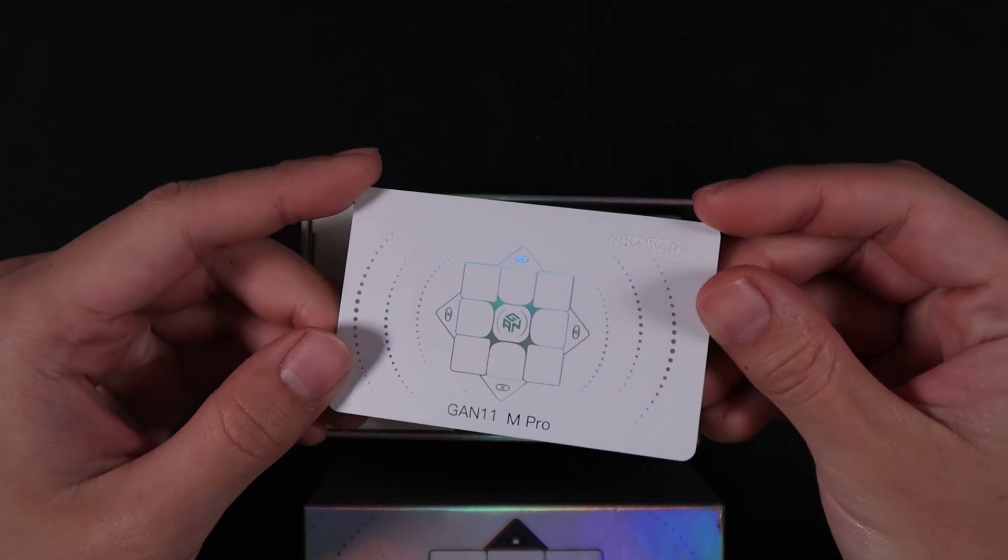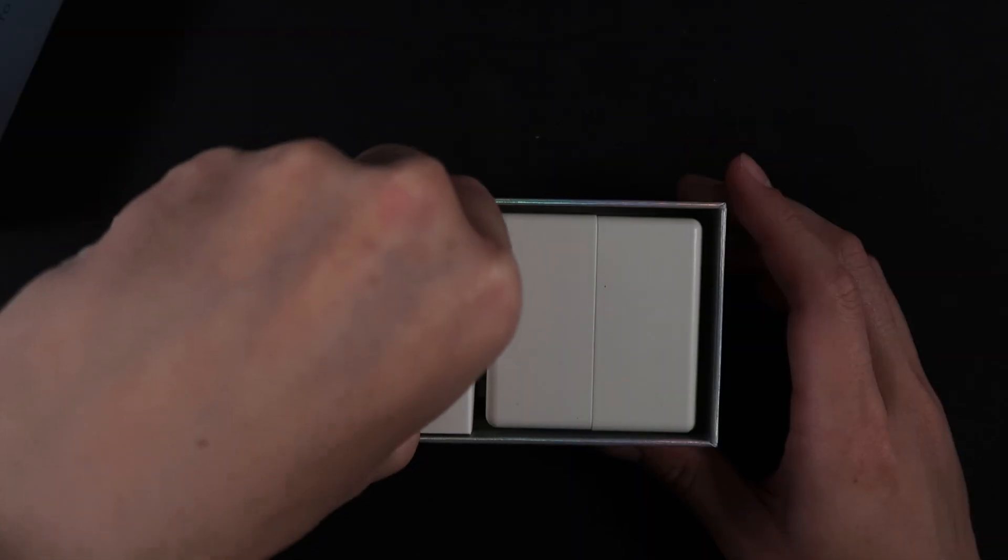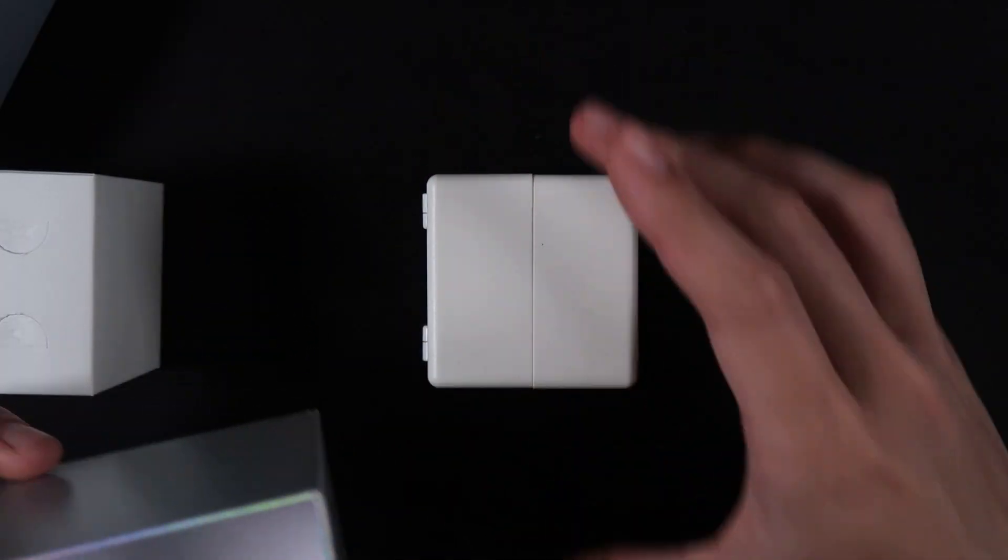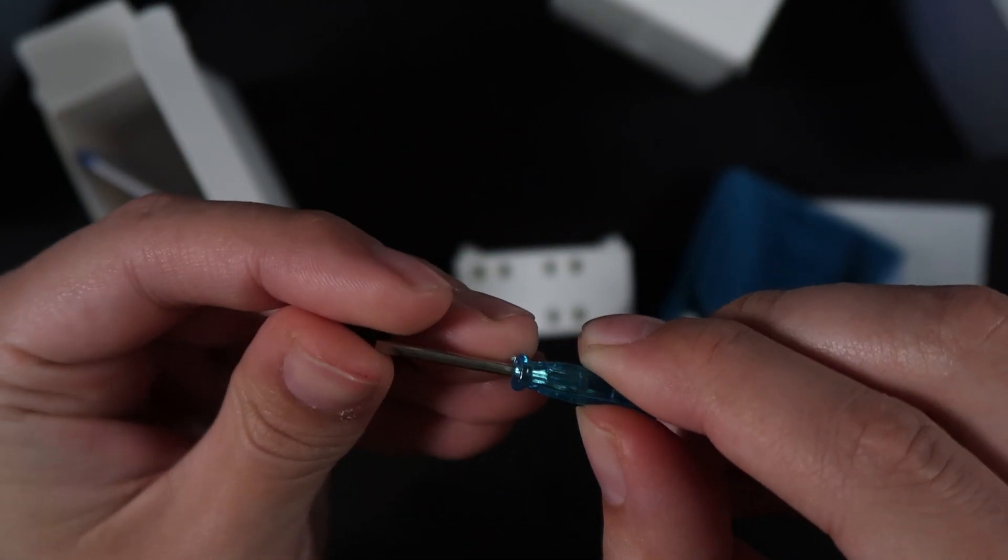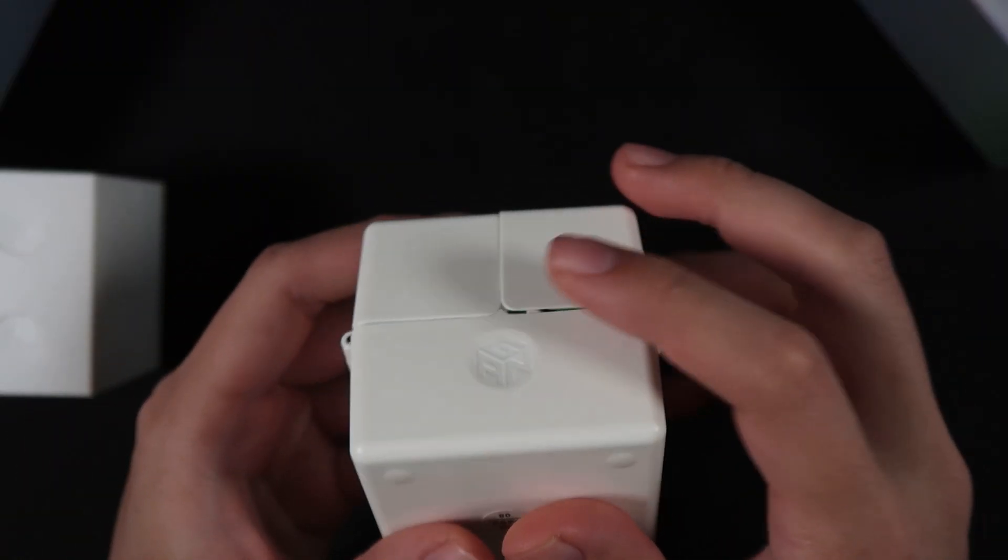In the box we see the standard stuff, including an ID card, accessories box, and the cube itself. The 11M Pro also includes a screwdriver. This is supposed to be used for corner magnets as you'll see in a bit, but I still find this to be deeply ironic.